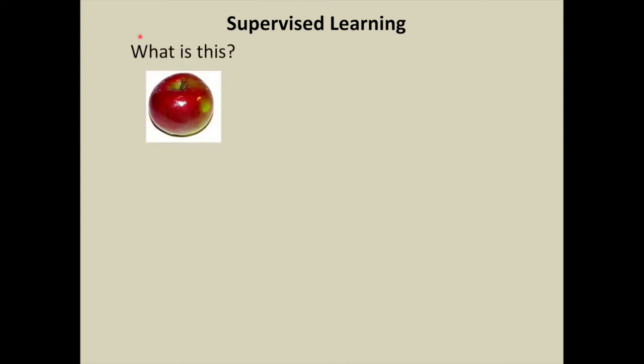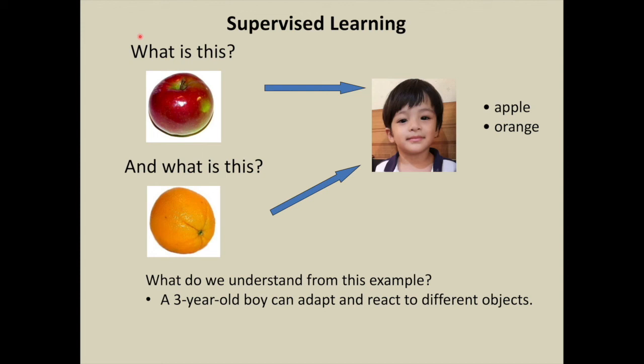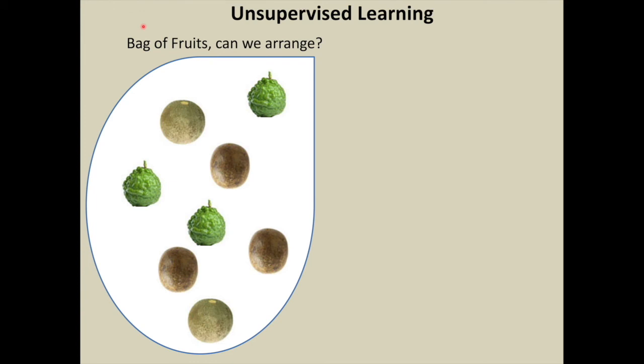Let us see very quickly what is supervised learning. If you ask what is this object to a 3-year-old kid, he will promptly reply that it is an apple and an orange. A 3-year-old boy can adapt and react to different objects. We want to teach similar adaptation to a machine to recognize and provide actions.